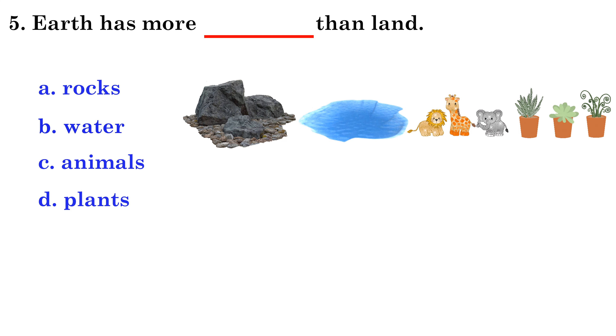Question 6: River water takes the soil or small rocks from one place to another is called C. Erosion. Question 7: Which can cause weathering? B. Wind, water, ice, and living things.